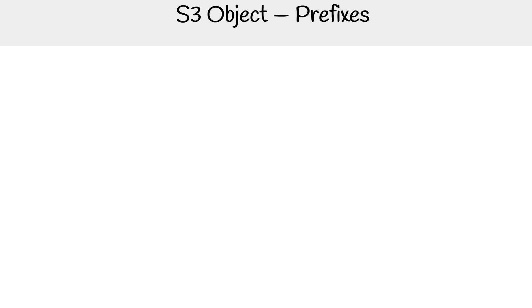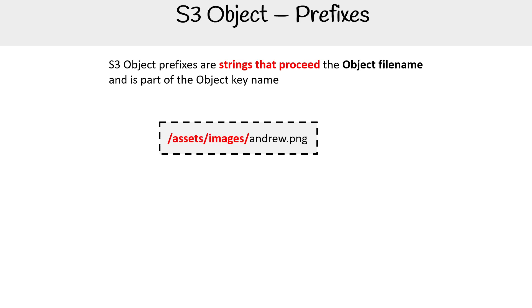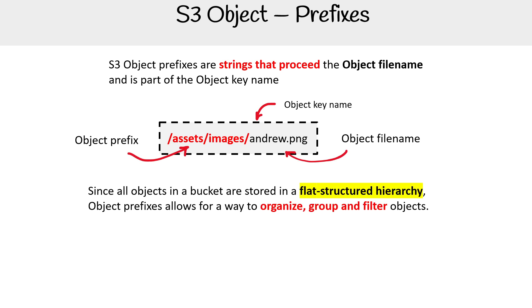S3 object prefixes are strings that precede the object file name, and it's part of the object key name. So this whole thing is an object key name, this part is the prefix, and this part is the file name.